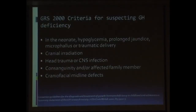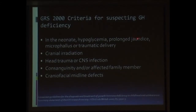So when you have a child with suspected growth hormone deficiency, how do we start? The consensus statement given by the Growth Hormone Society has given us auxological criteria which we have to meet. In addition, they give us certain clinical conditions in which we should suspect GH deficiency — for example, a neonate with hypoglycemia, prolonged physiological jaundice, micropenis, a history of cranial irradiation, CNS tumors or CNS infections, or when we have midline defects.